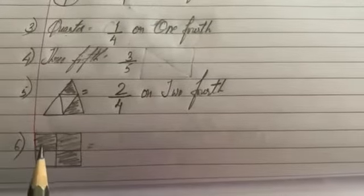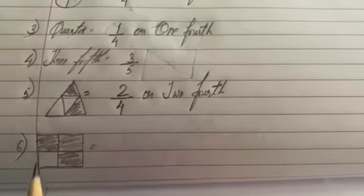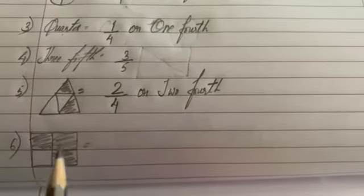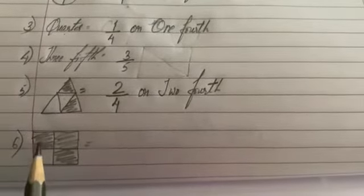Number 6 — this is a square. It has 4 parts and 3 parts are shaded. So the answer is 3 upon 4 or 3 fourth.